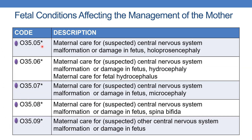Continuing O35 CNS codes: O35.05 is for holoprosencephaly. O35.06 is for fetal hydrocephaly. O35.07 is for microcephaly. O35.08 is for suspected spina bifida. O35.09 is for suspected other central nervous system malformation or damage in fetus.